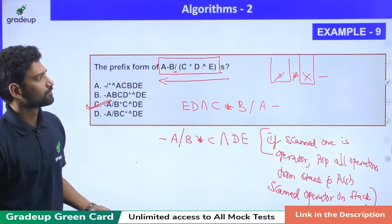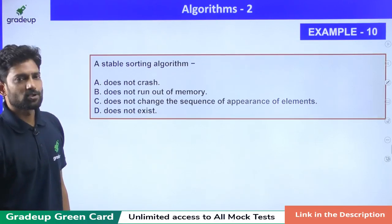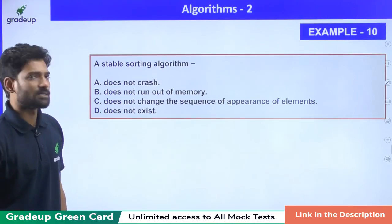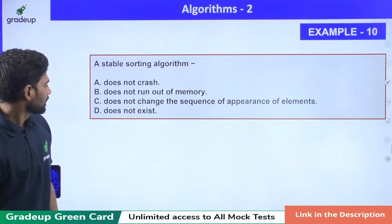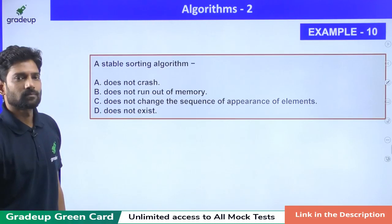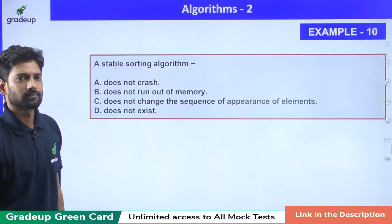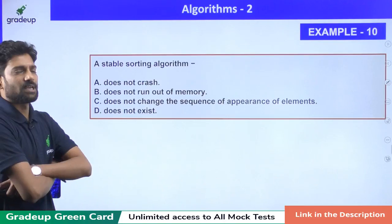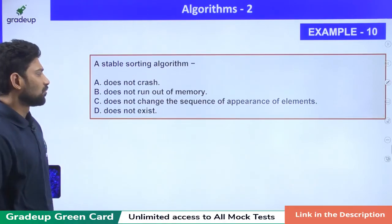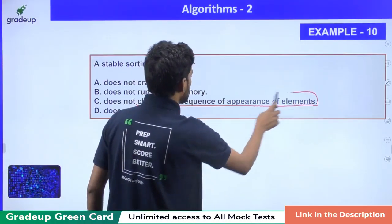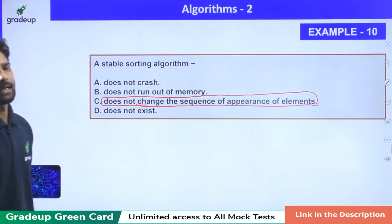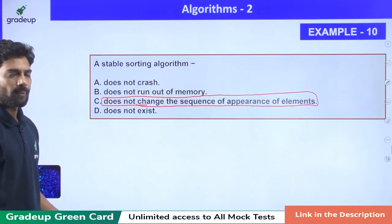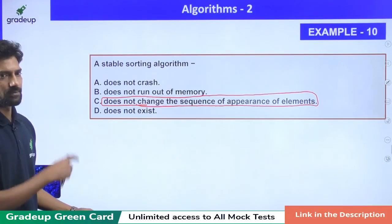Next one. A stable sorting algorithm does not crash, does not run out of memory, does not change the sequence of appearance of elements, does not exist. What is that? A stable sorting algorithm, which is called stable sorting algorithm. Yes, while you are sorting, when the sequence of elements does not change, that is called stable sorting algorithm. This is very important, you can remember.